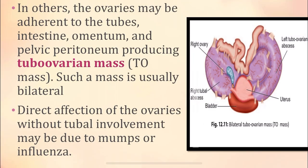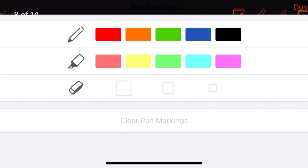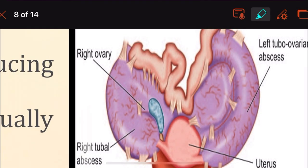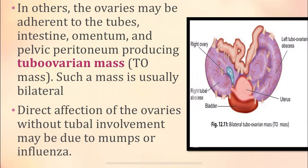The ovaries will be adherent to the tubes. The ovaries start adhering to the fallopian tubes, or they will start adhering to the intestine or the omentum of the intestine. So the ovaries can adhere to the tubes, intestine, omentum, or the pelvic peritoneum, and then produce the tubo-ovarian mass.